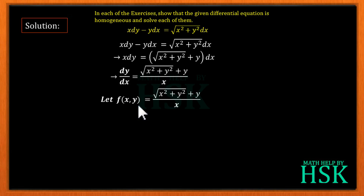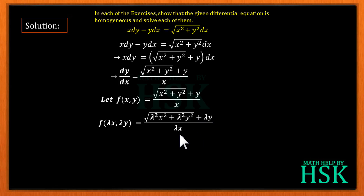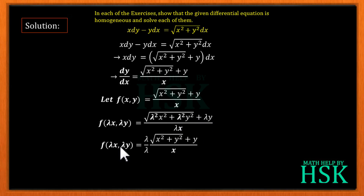We assume this right hand side as f(x, y). After that we calculate the value of f(λx, λy), obtained by replacing x with λx and y with λy. This gives f(λx, λy) = (√(λ²x² + λ²y²) + λy) / (λx), which we can write as (λ/λ) × (√(x² + y²) + y) / x.